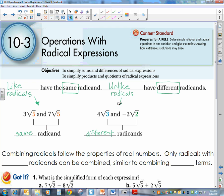Now, the important thing to remember is that combining radicals follows the properties of real numbers. That is, only radicals with like radicands can be combined, similar to combining like terms.